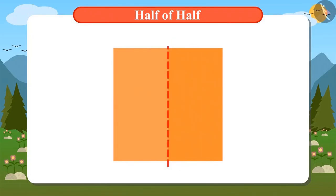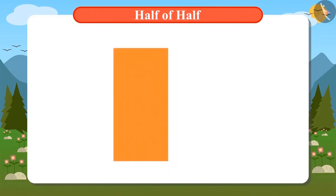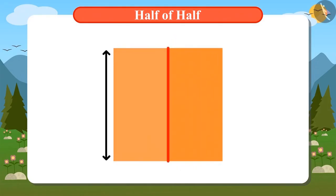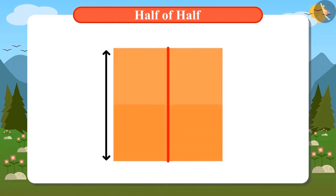We got these two parts by dividing it into two halves. Yesterday, this one half we had divided in this manner. But we can divide it from the long side too. Look, to divide it into half, we have to draw a line like this. Now, Vandana, tell me if this part is one fourth or not. This is also half of half, so this is also a one fourth part.